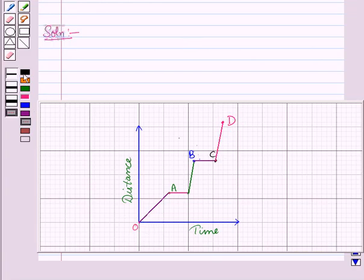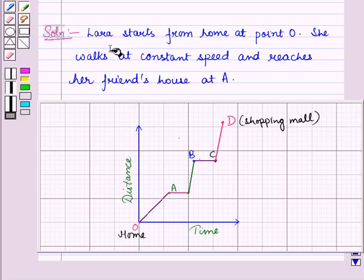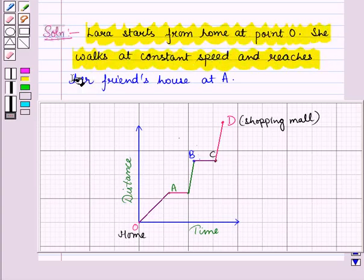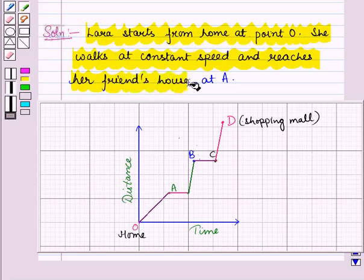So this is the graph which describes Lara's journey from home at point O to shopping mall at the point D. So we can write Lara starts from home at point O. She walks at constant speed and reaches her friend's house at point A.